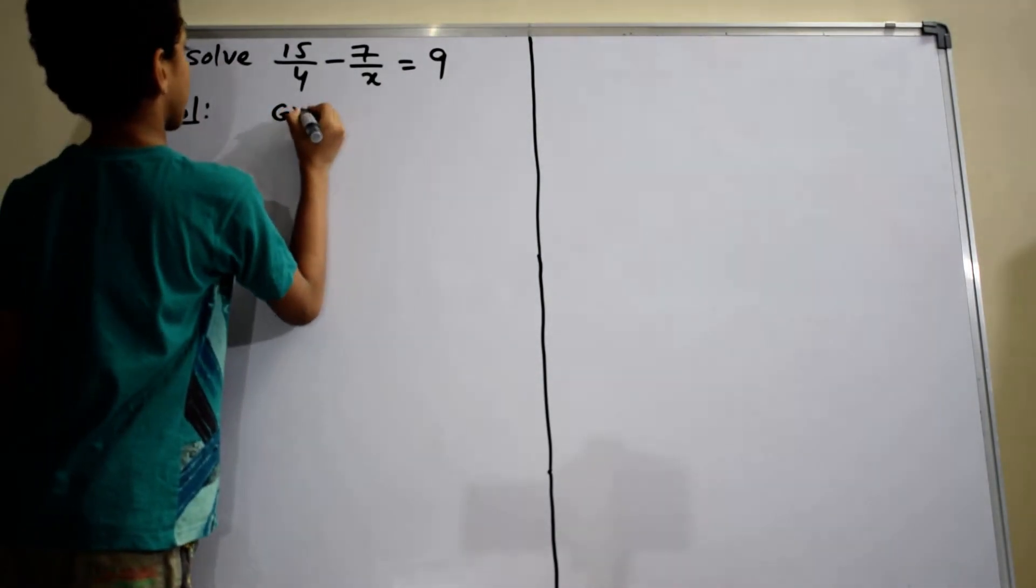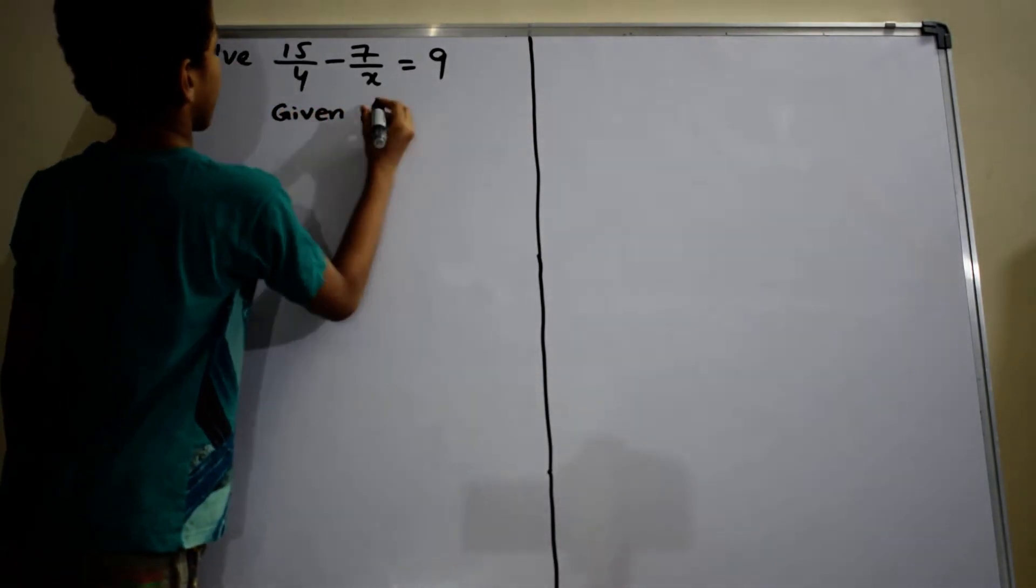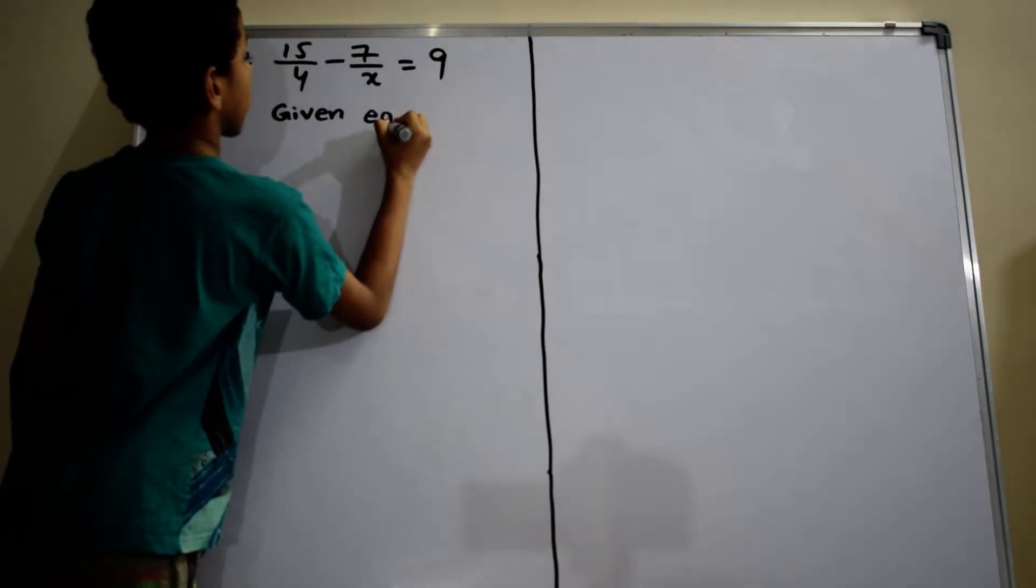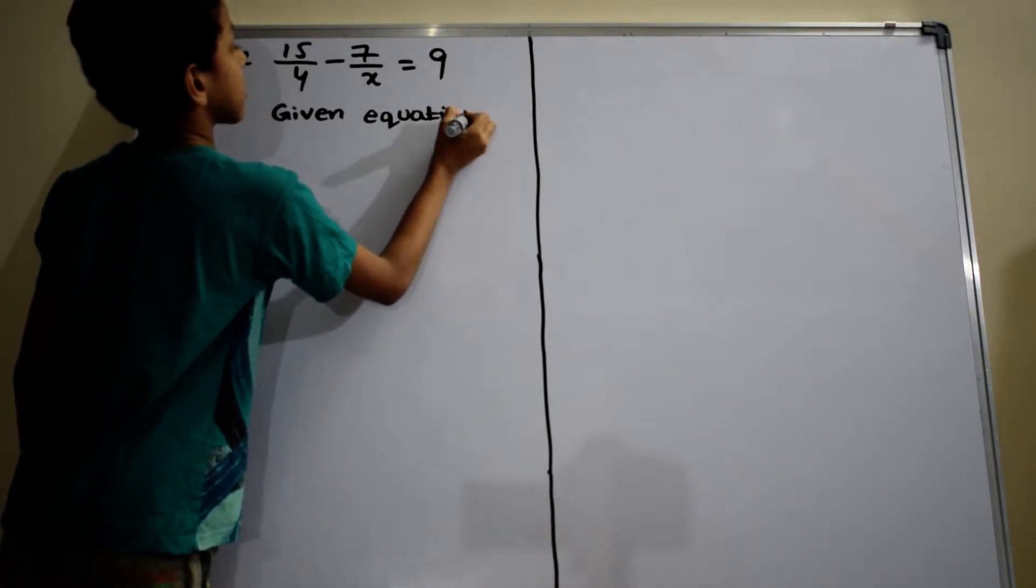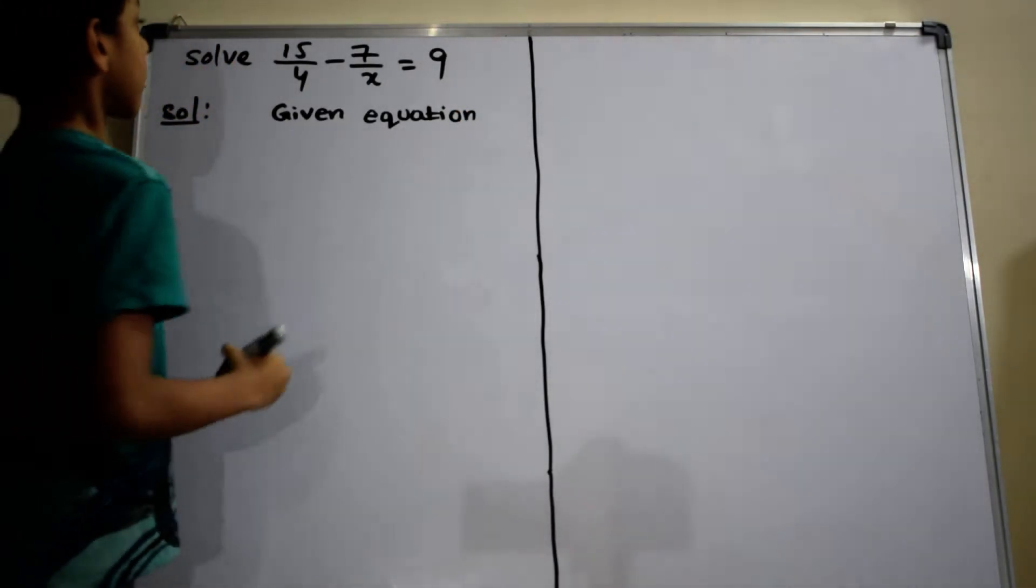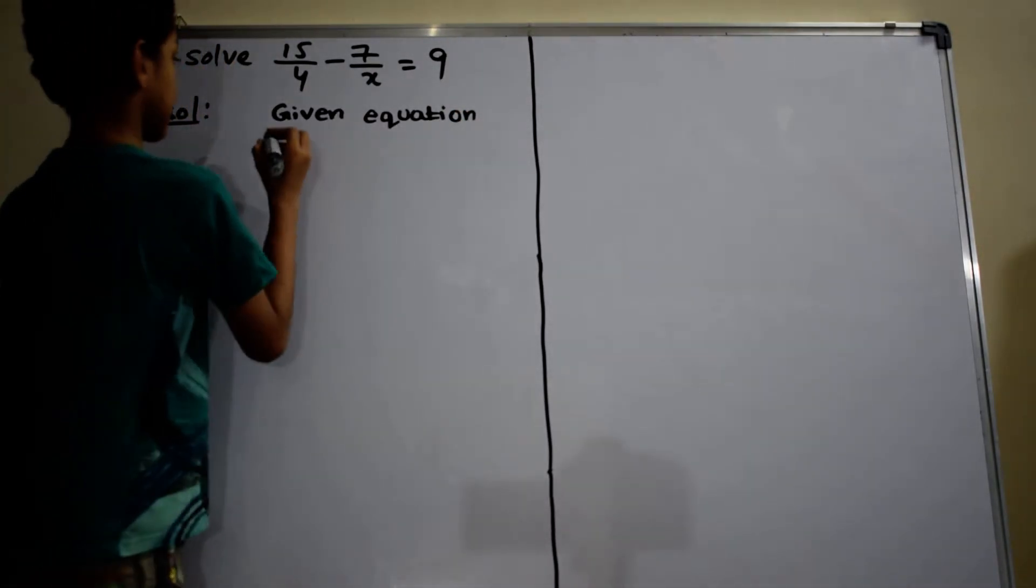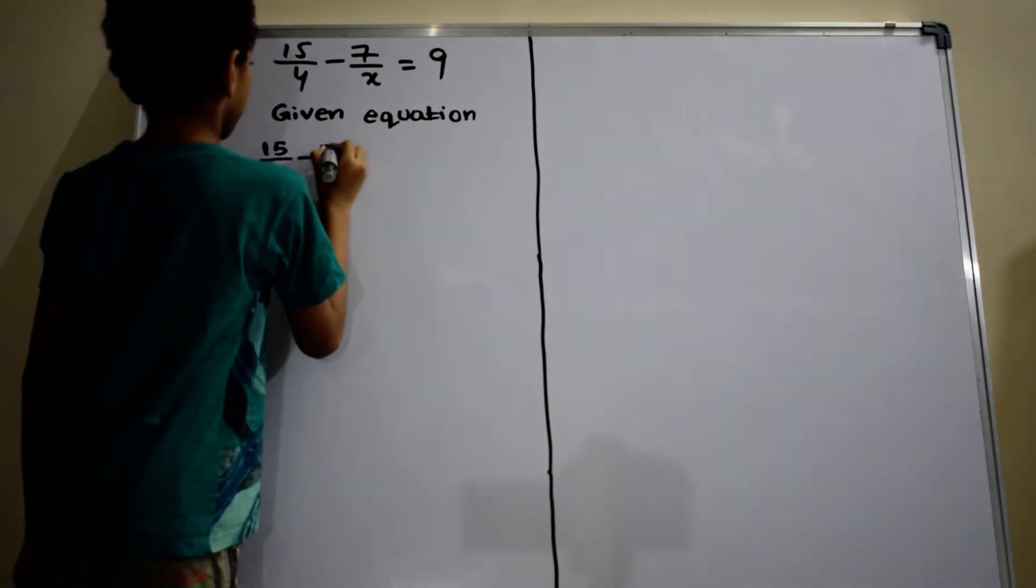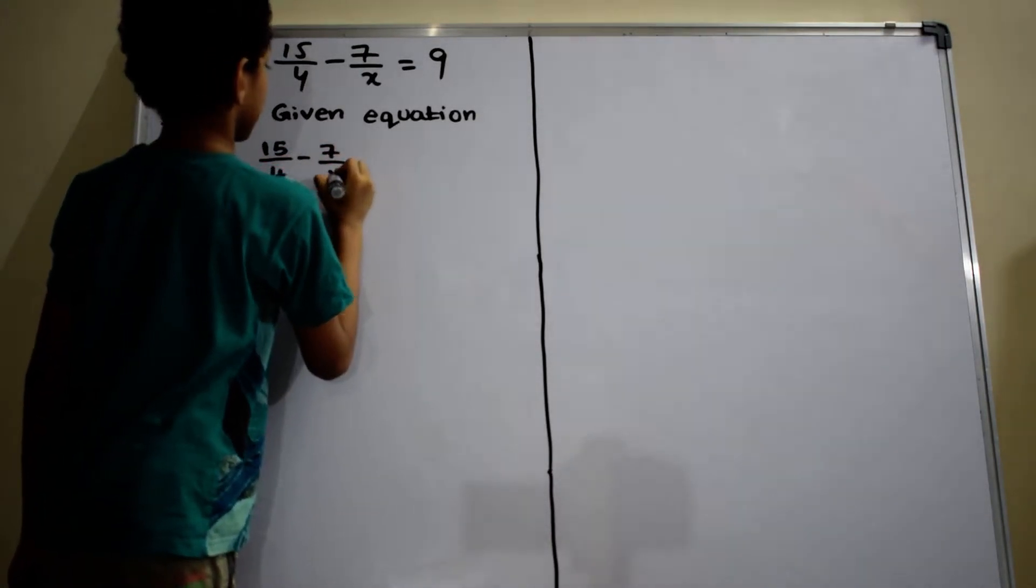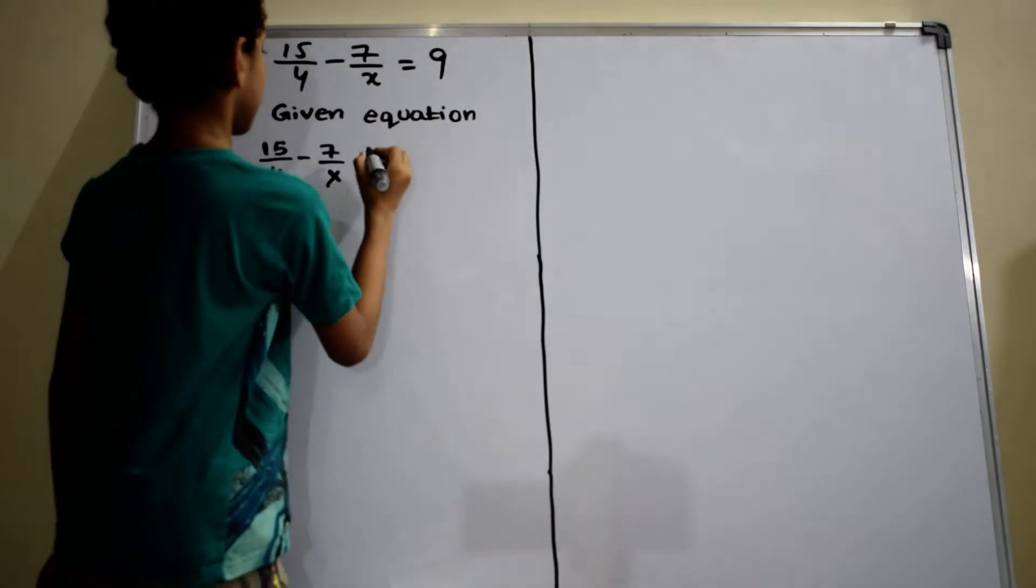Given equation: 15 by 4 minus 7 by x equals to 9.